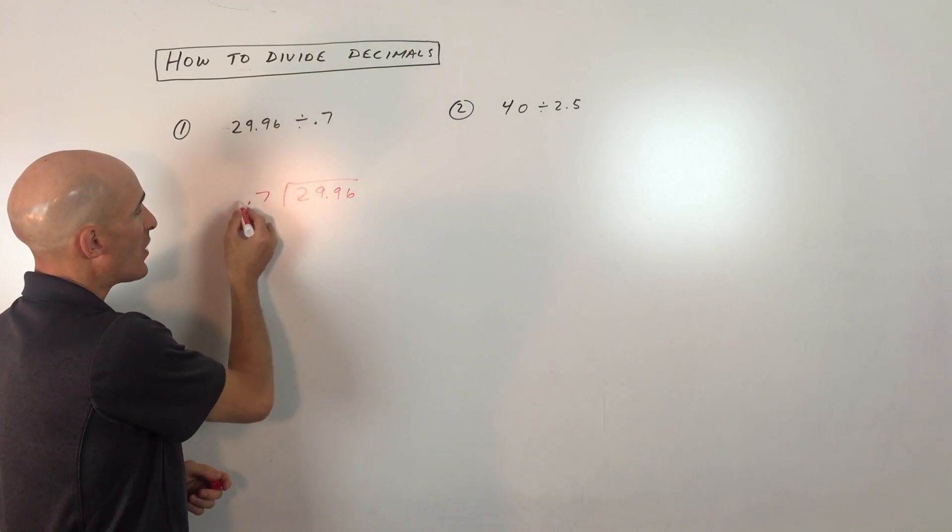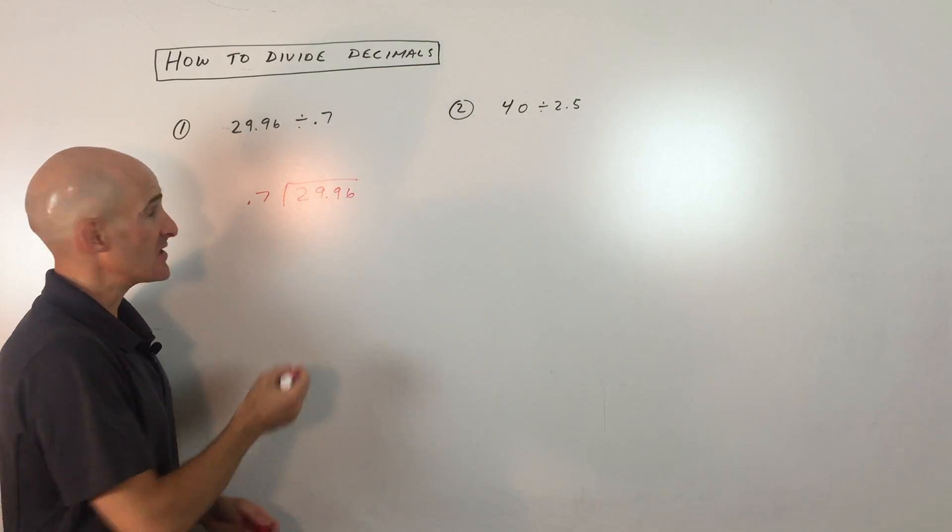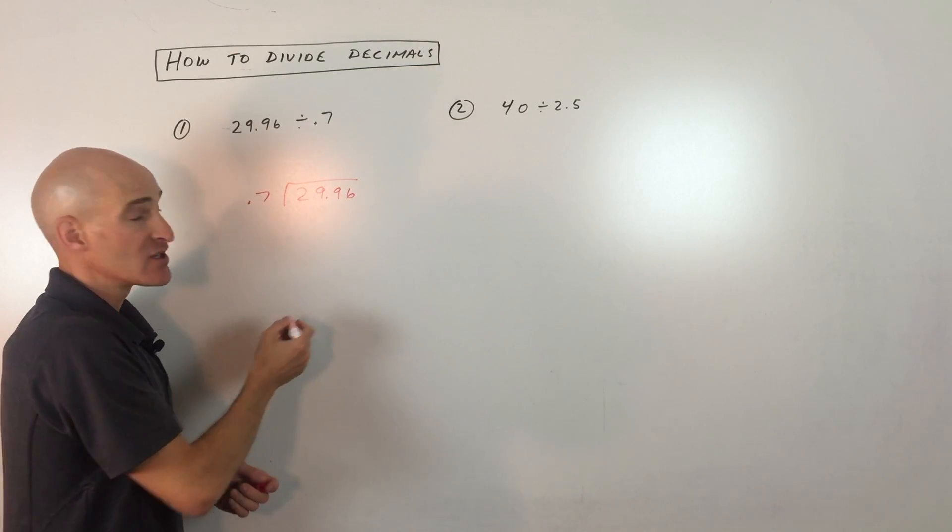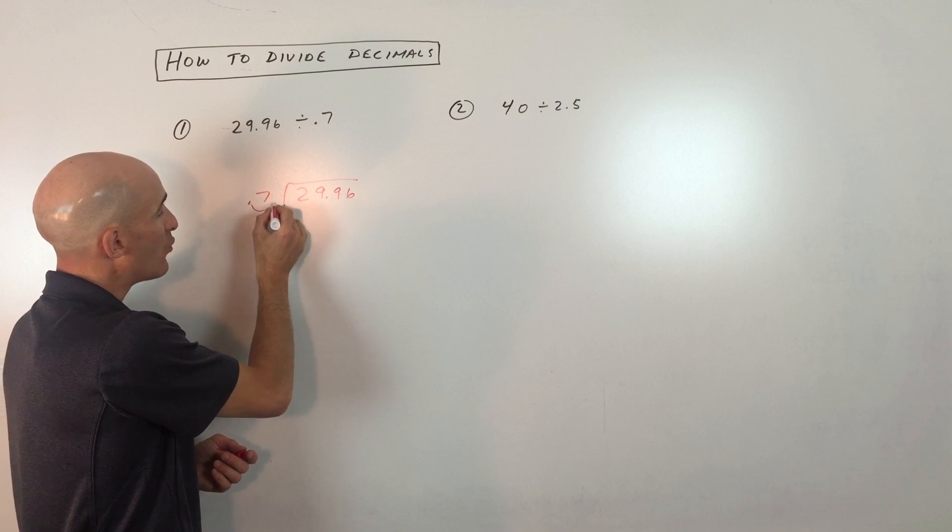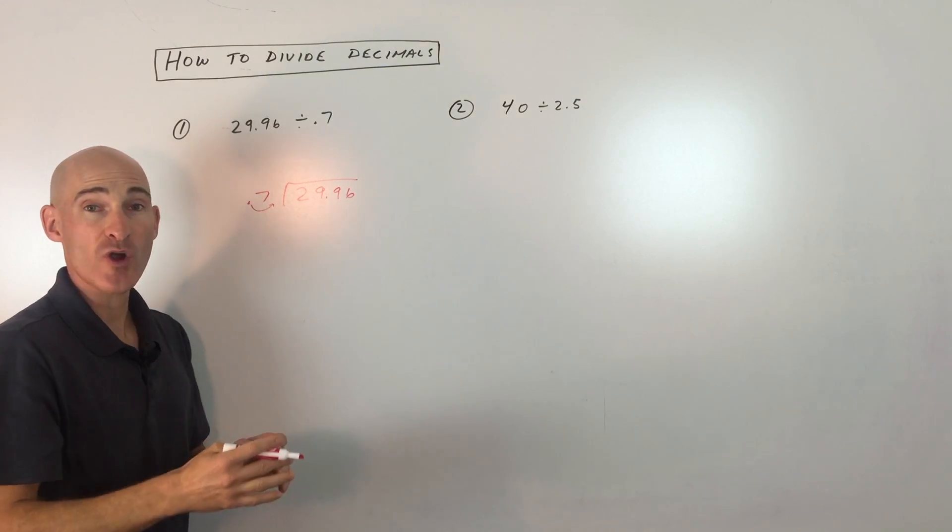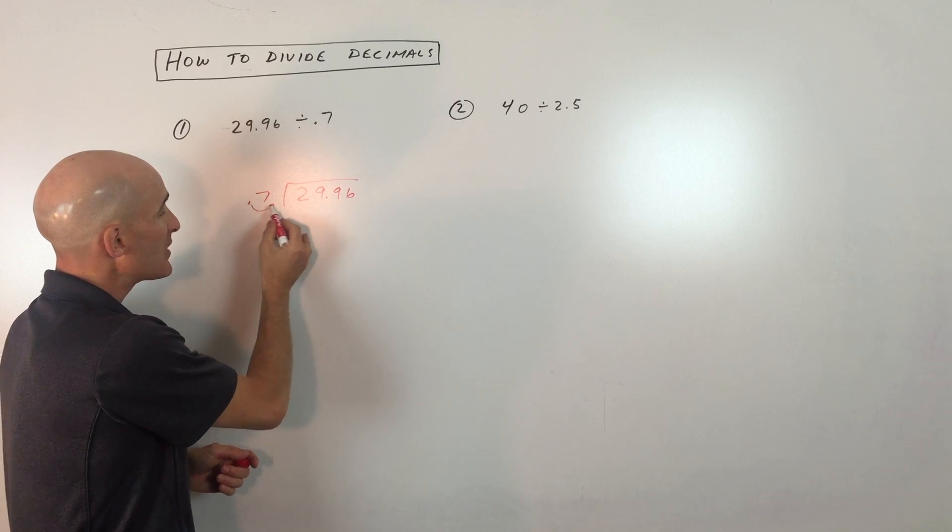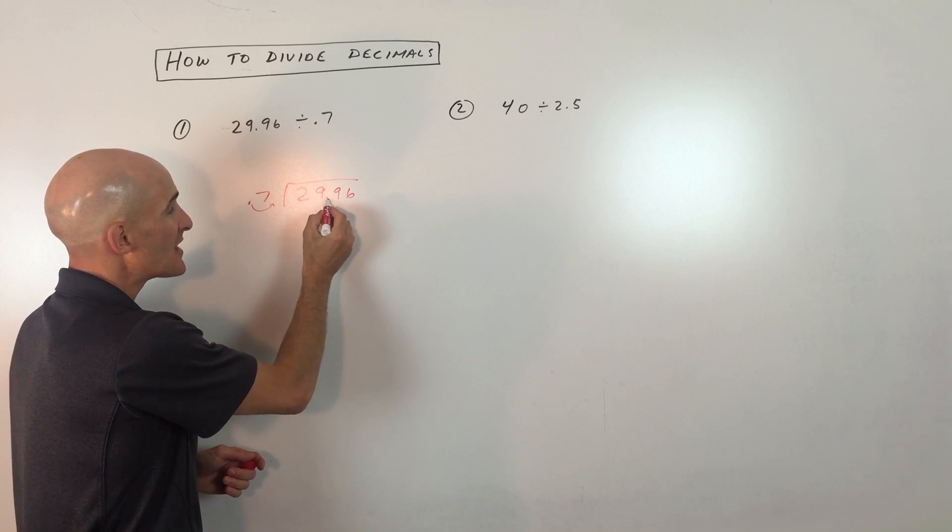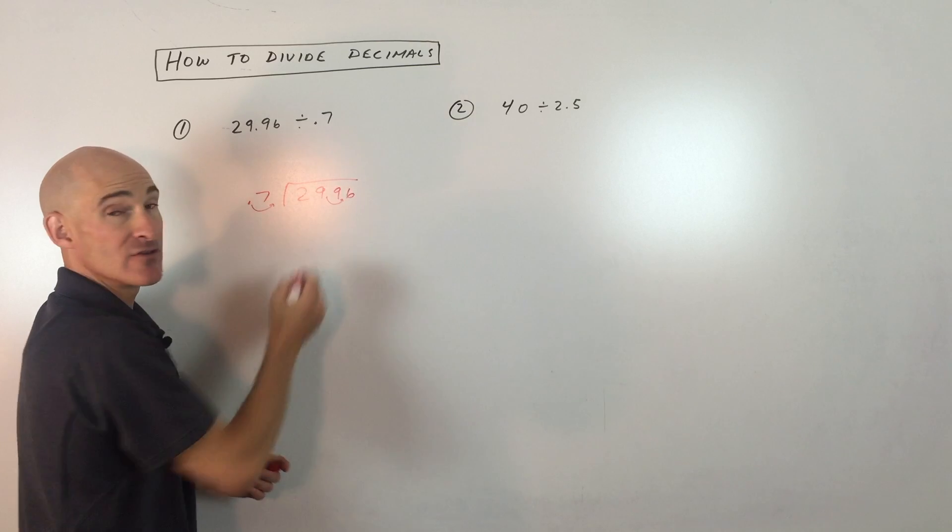What you want is this number that's going into 29.96 to be a whole number. So we're going to move the decimal point enough places to the right so that it becomes a whole number. However many places we move this to the right, we want to do the same thing with the number underneath the division bar.